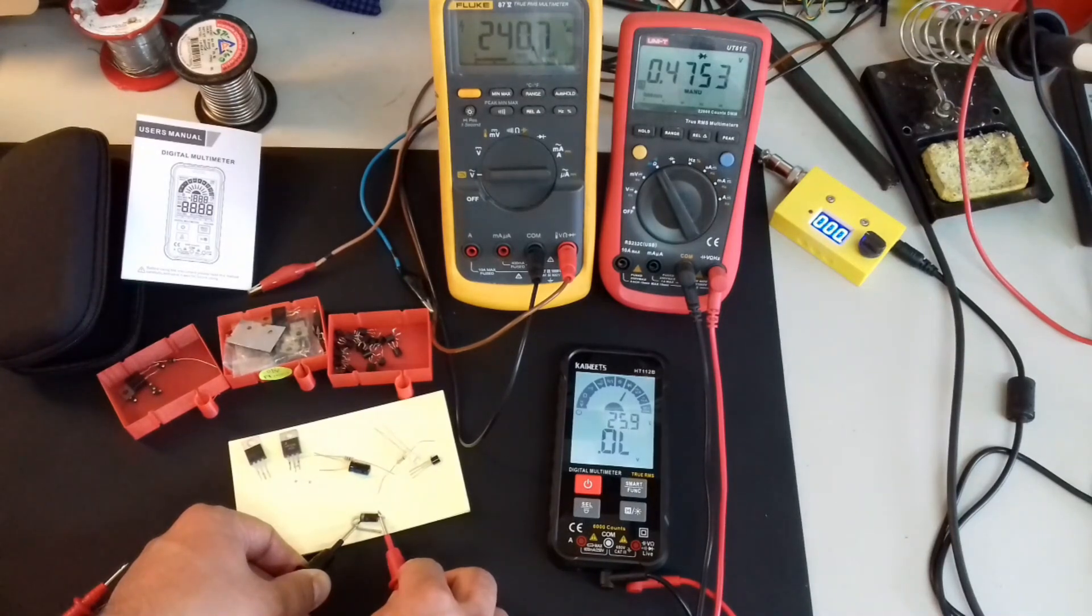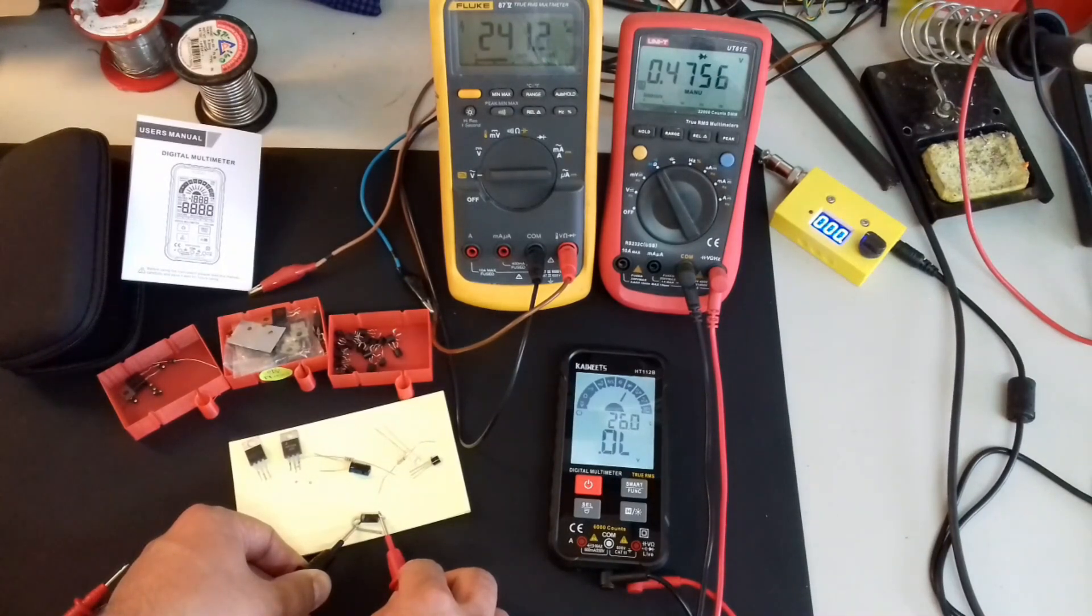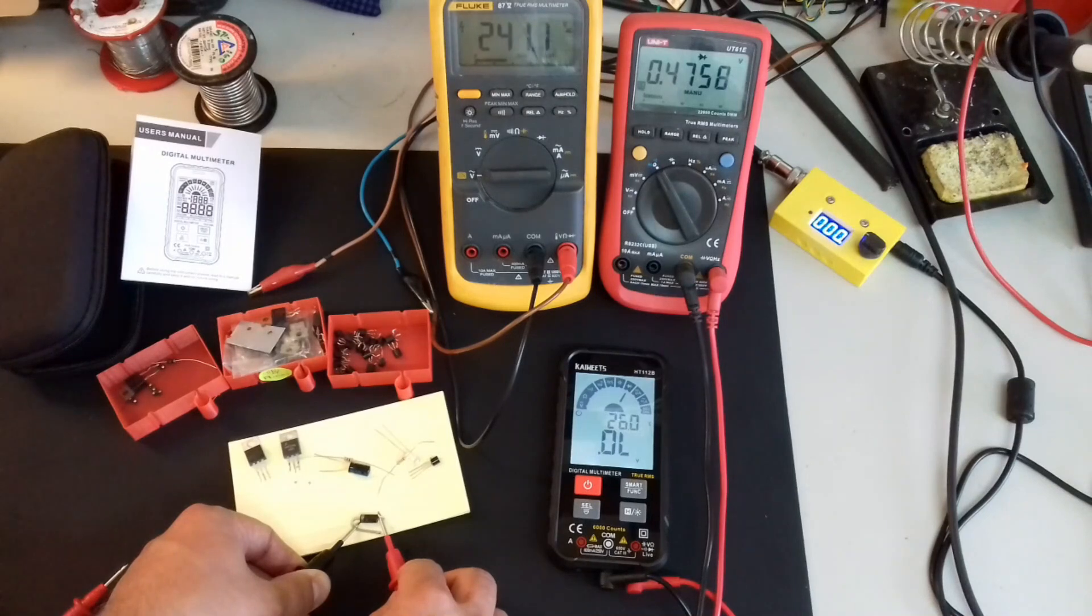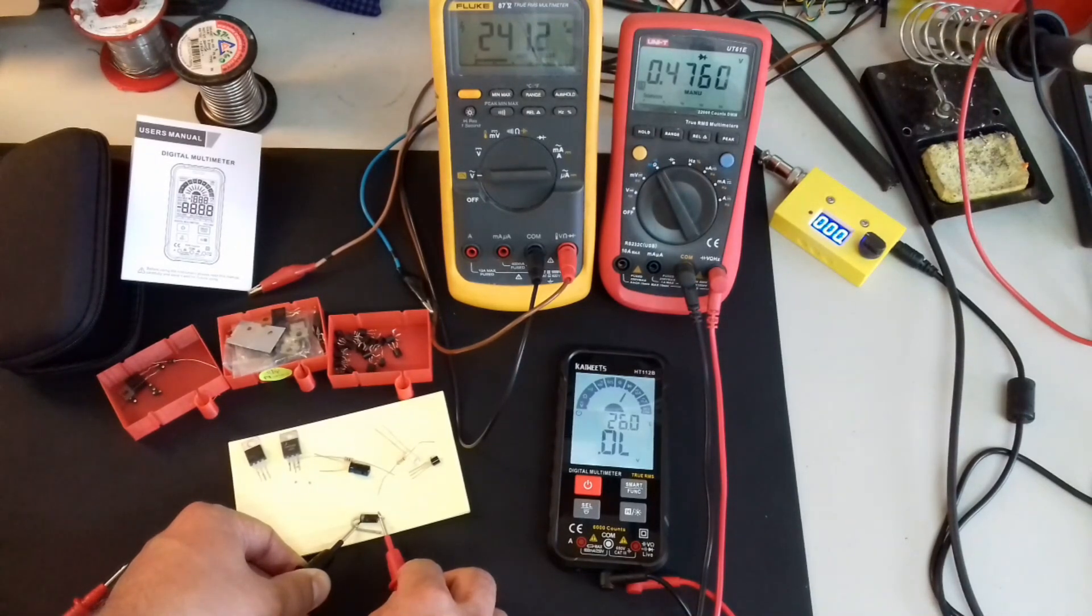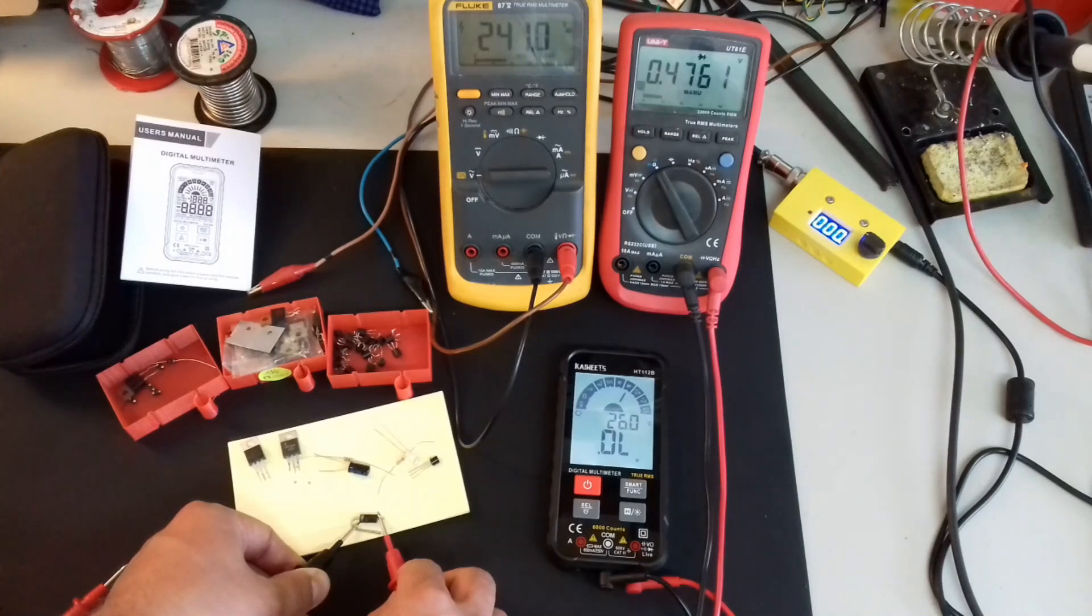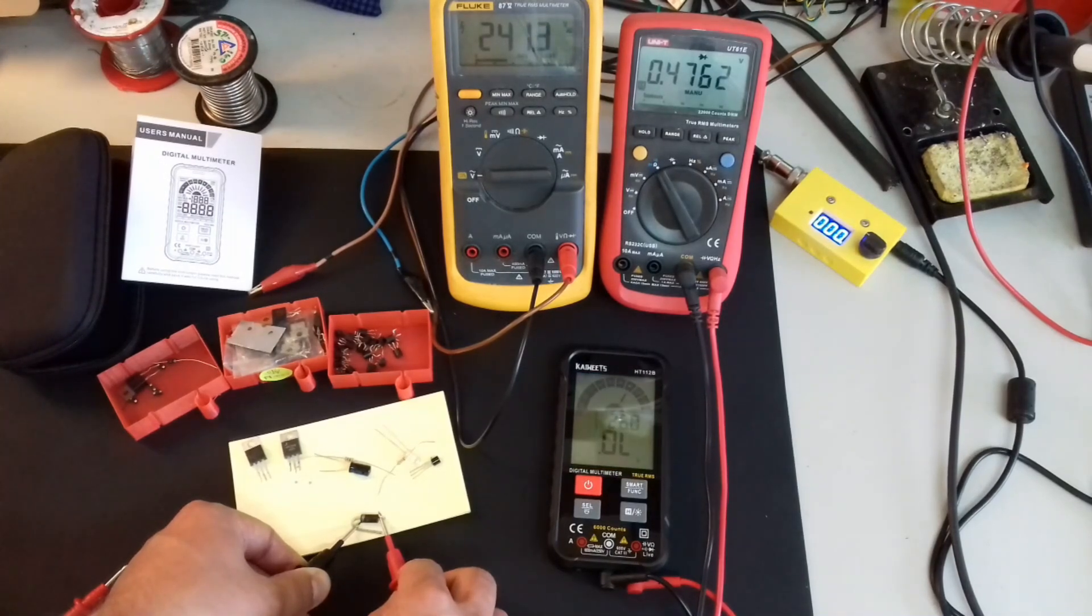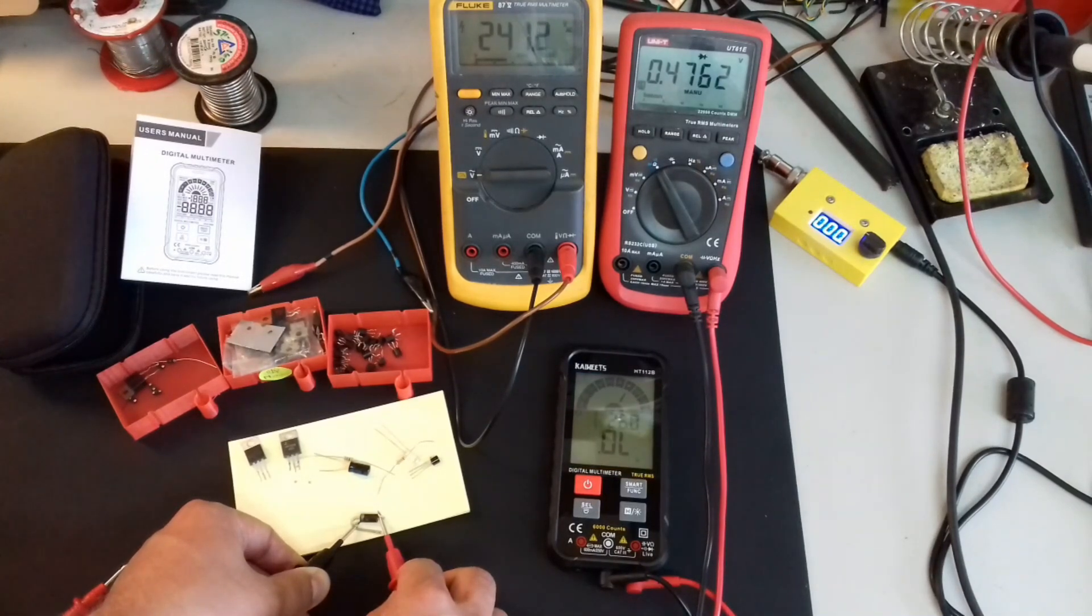I'm going to test this diode with the UT61E multimeter that I have here. So, you can see a forward voltage comparison here for 76 millivolts.